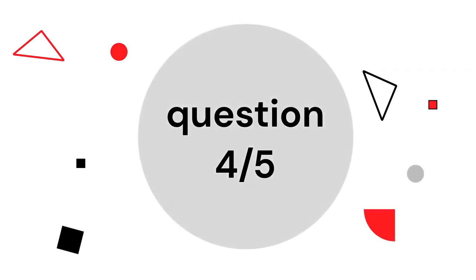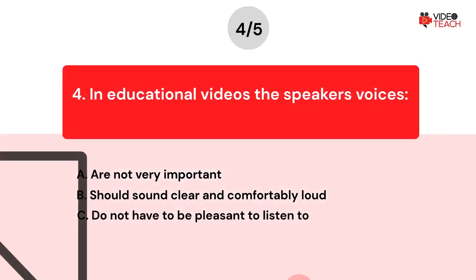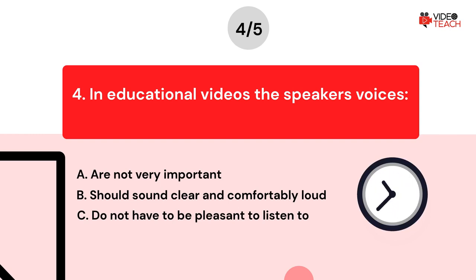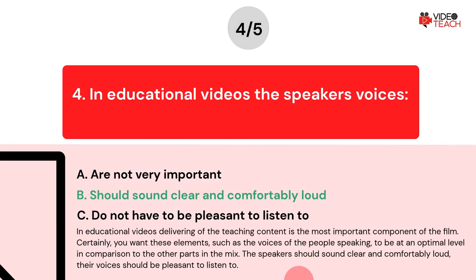Question number four. In educational videos, the speaker's voices — option A — are not very important; option B — should sound clear and comfortably loud; option C — do not have to be pleasant to listen to. The correct answer is B. In educational videos, delivering the teaching content is the most important component of the film. You want these elements, such as the voices of the people speaking, to be at an optimal level in comparison to the other parts in the mix. The speakers should sound clear and comfortably loud, and their voices should be pleasant to listen to.